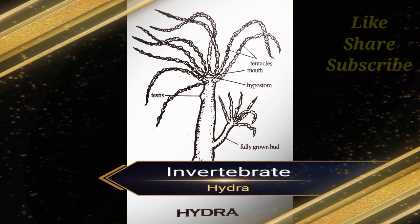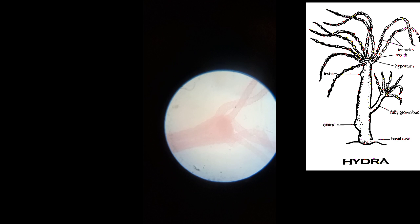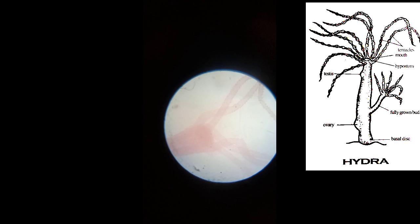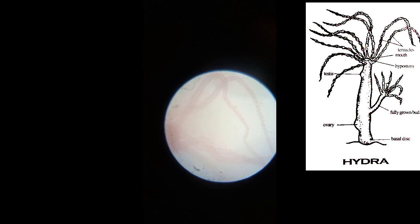Hydra has tentacles. The anterior oral cone consists of a mouth leading into the gastrovascular cavity. Around the oral cone, 6 to 10 hollow tentacles are present. These tentacles are used for capturing food and for locomotion. In adults, male gonads are present near the oral cone, and female gonads are present at the basal disc.